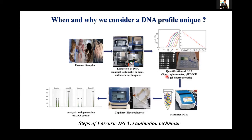After obtaining an optimum quantity of DNA, we go for PCR amplification. Here we perform multiplex PCR, which I will share on my next slides. After amplification, we go for capillary electrophoresis. During capillary electrophoresis, we separate all the amplified products on the basis of their size as well as on the basis of the dyes associated with each DNA fragment. Finally, we obtain a DNA profile.